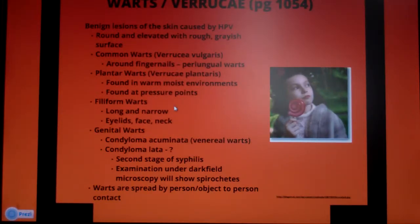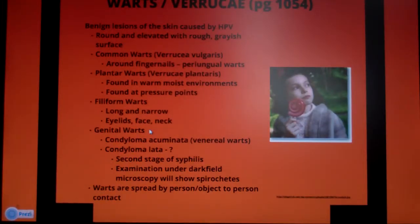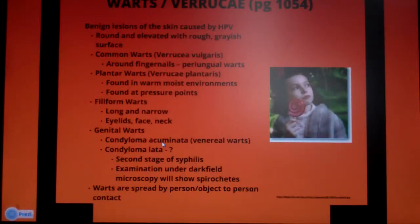Filiform warts are the long and narrow little skin-tag-like things found on eyelids, face, and neck. Then of course there are genital warts, and you have to be a little careful when talking about them because there are a couple of different types — whether they are sexually transmitted or not. We're talking about condyloma acuminata, or venereal warts.